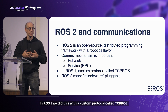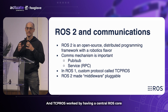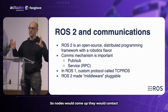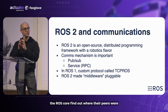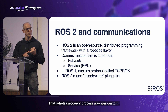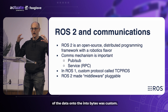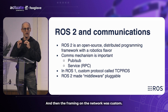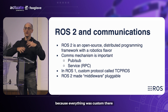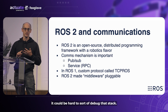In ROS1, we did this with a custom protocol called TCP ROS. TCP ROS worked by having a central ROS core used only for discovery. Nodes would come up, contact the ROS core, find out where their peers were, and then direct connect to their peers. That whole discovery process was custom, the serialization of the data into bytes was custom, and the framing on the network was custom. That worked very well, but because everything was custom, we had problems with tooling and it could be hard to debug that stack.